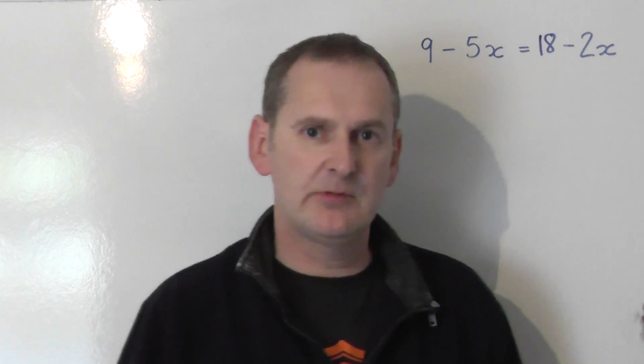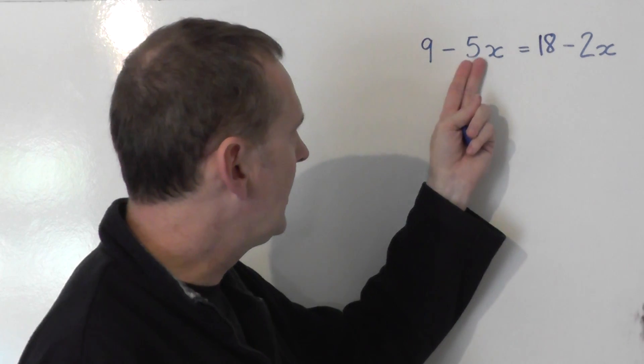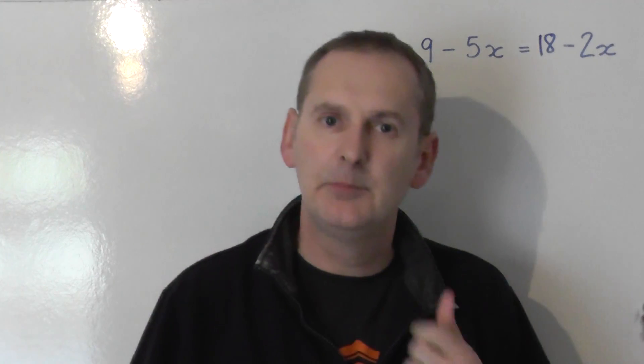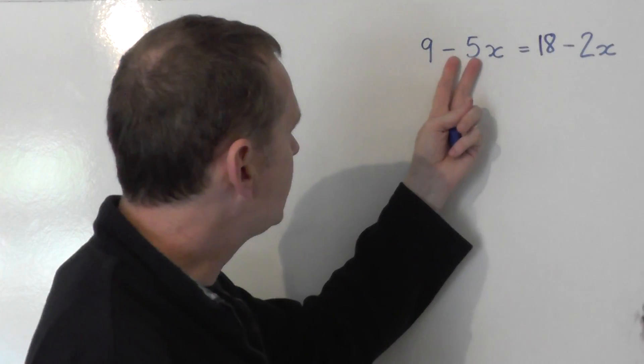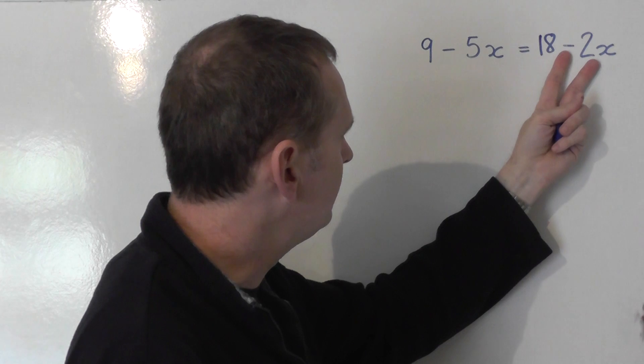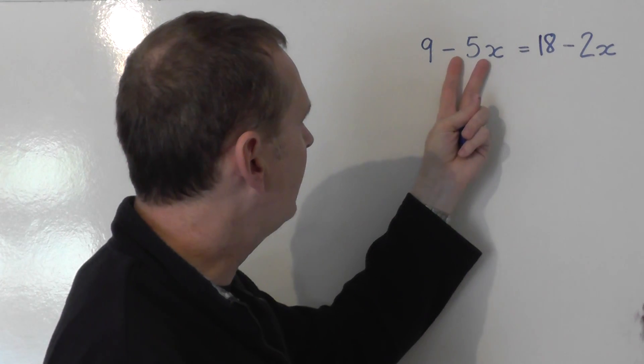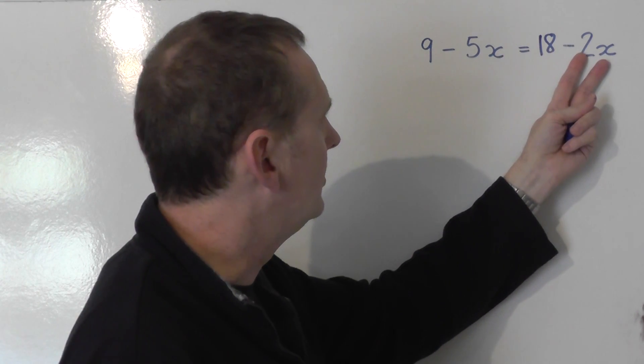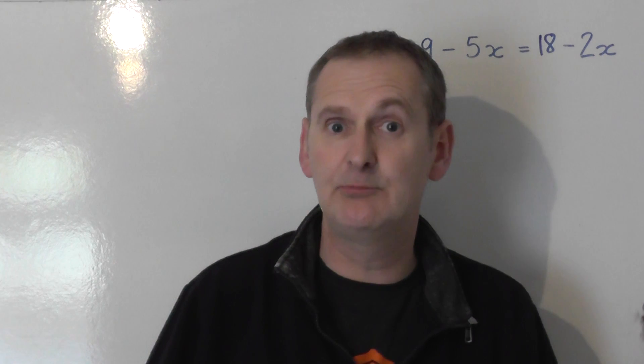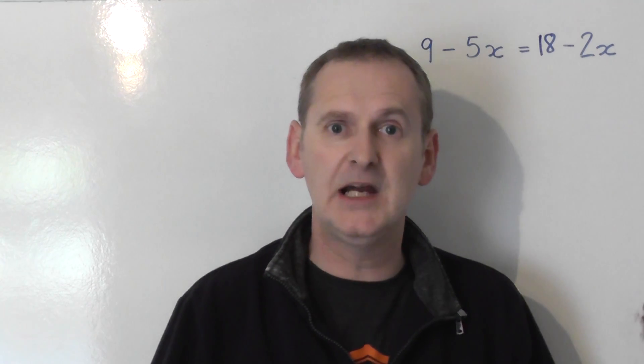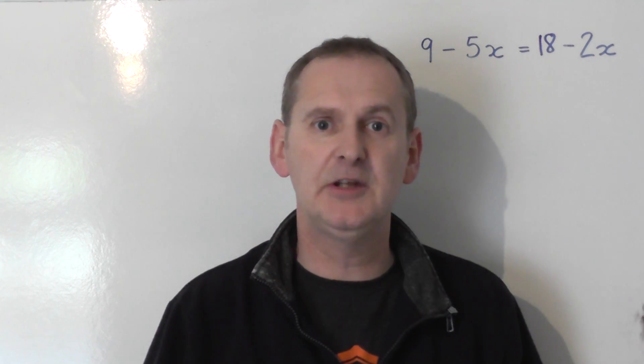Your initial reaction might be to think there's more x's on the left because 5 is bigger than 2. But if you look closely, this is negative 5x and that's negative 2x. This is 5 below 0, that's 2 below 0. If you look at temperature, minus 2 is actually a bigger value than minus 5.